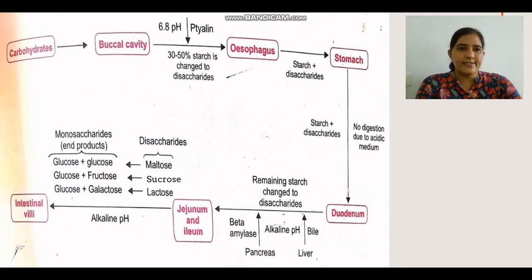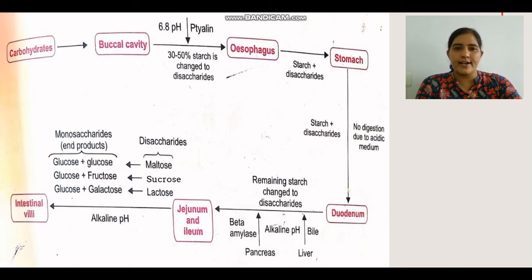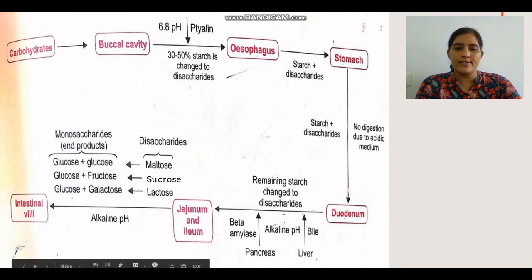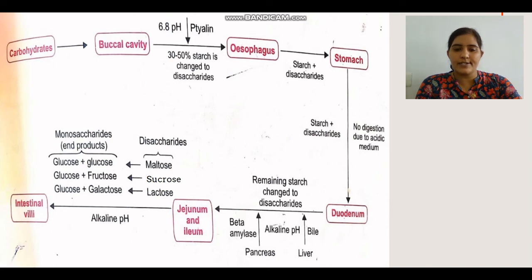In summary, carbohydrate digestion begins in the buccal cavity, where salivary amylase or ptyalin enzyme, working at 6.8 pH, converts starch to disaccharides. About 30-50% of starch is converted. The food, now called bolus, reaches the stomach via the pharynx and esophagus. In the stomach, HCl secretion stops salivary amylase activity and there is no carbohydrate digestion. In the small intestine, the hepatopancreatic duct opens into the duodenum, releasing pancreatic juice containing pancreatic amylase, also called beta-amylase, which digests the remaining starch.